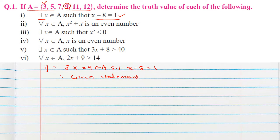'There exists' means that if even one number satisfies the condition, the statement is true. On the other hand, 'for all' means that all elements in the set must satisfy the condition for it to be true.